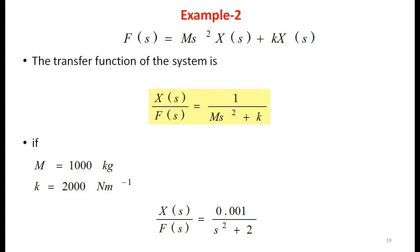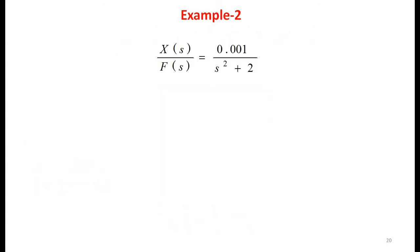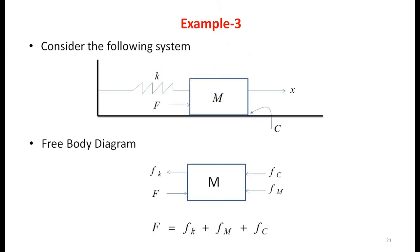The transfer function for Example 2 is X(s)/F(s) = 1/(ms² + k). With m = 1000 kg and k = 2000 N/m, the transfer function becomes X(s)/F(s) = 0.001/(s² + 2).